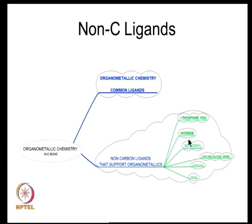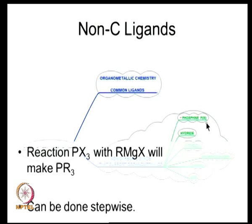Metal hydride chemistry, metal nitrosilyls, metal dinitrogen chemistry, and metal halides are all important in organometallic chemistry. Although the chemistry may not happen at the metal-carbon centre, these are good supporting ligands — I am calling them ligands that support organometallics. Today we will talk about phosphorous(III) ligands.